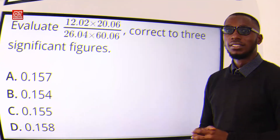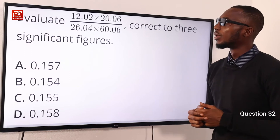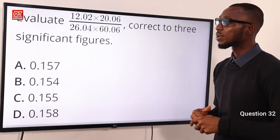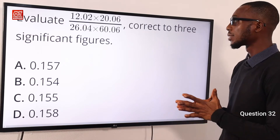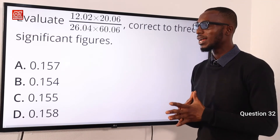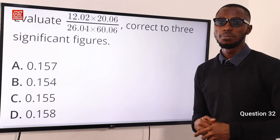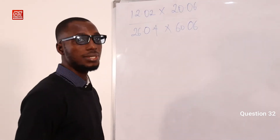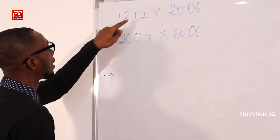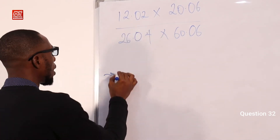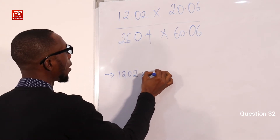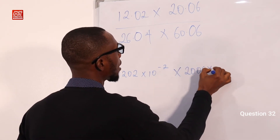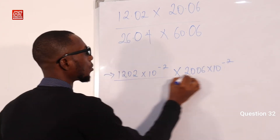Question 32: Evaluate (12.02 times 20.06) over (26.04 times 60.06), correct to 3 significant figures. Let's go to the whiteboard. We can bring all of these to standard form by expressing each number with two decimal places as a coefficient times 10 to the power minus 2.